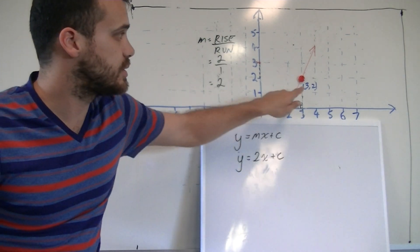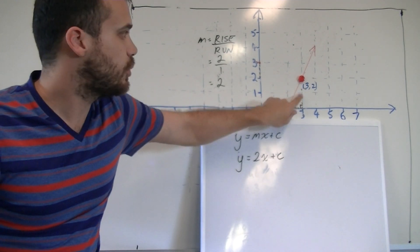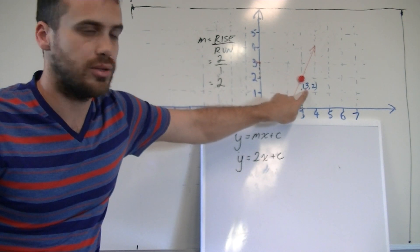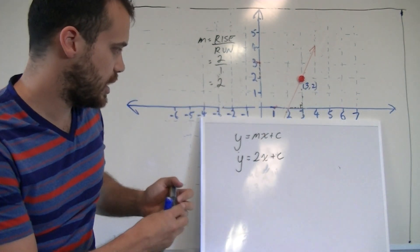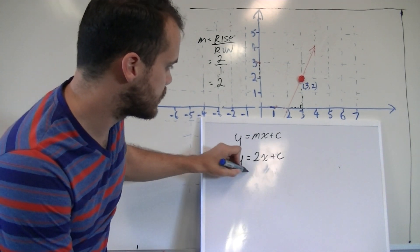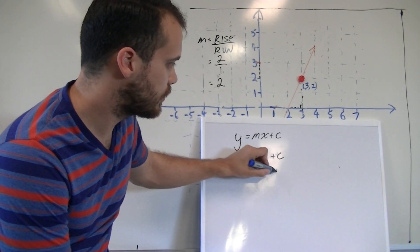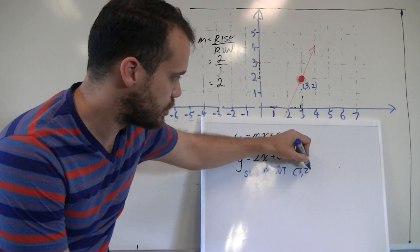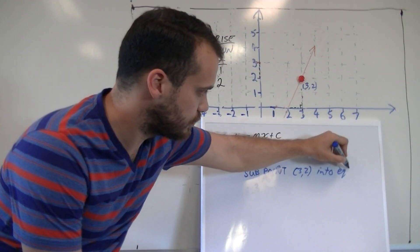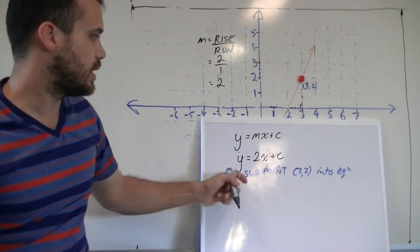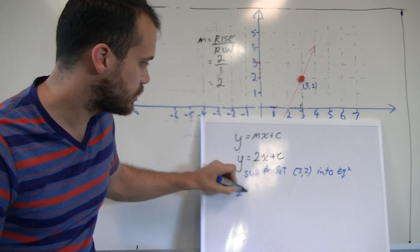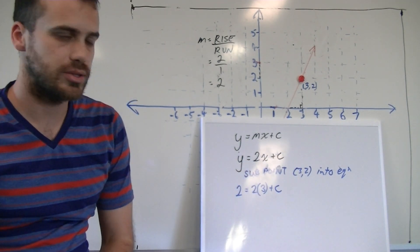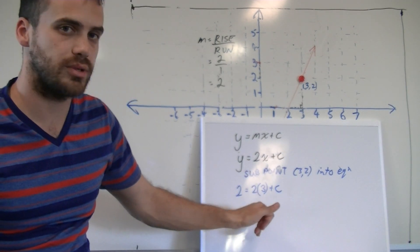Now what we do know is that there is a point on this line, (3,2), that means that when x equals 3, y equals 2. So what we can do is sub (3,2) into our equation. Now when we do that, when y is equal to 2, x is equal to 3, plus c. So 2 equals 2 times 3 plus c.